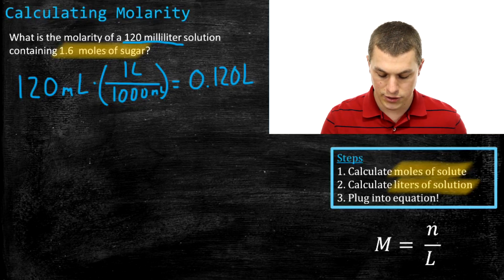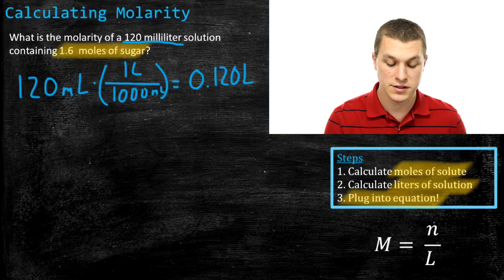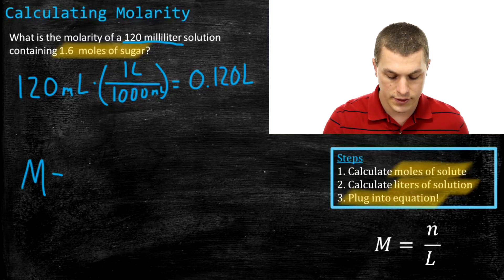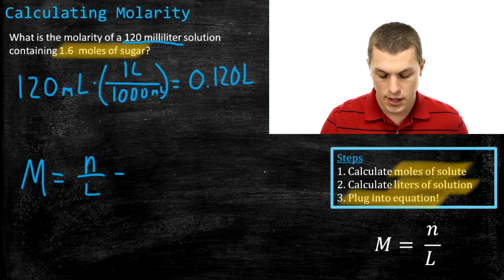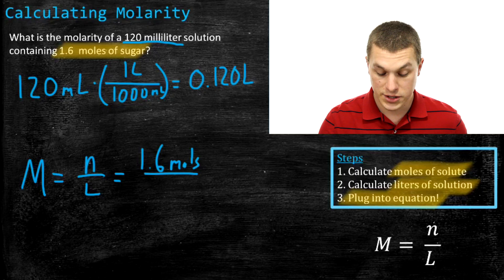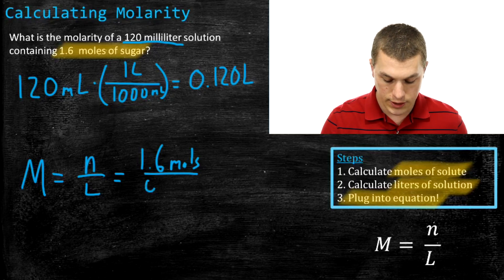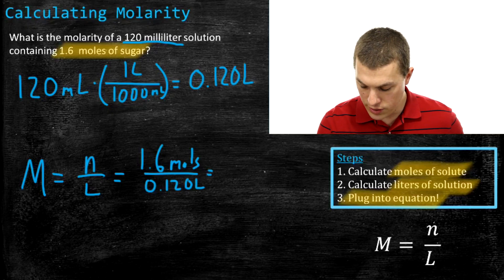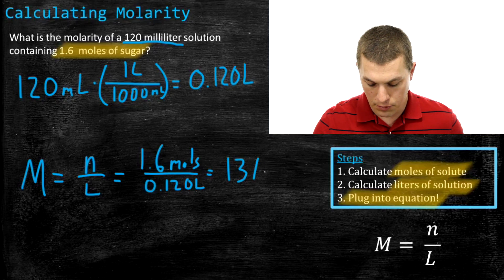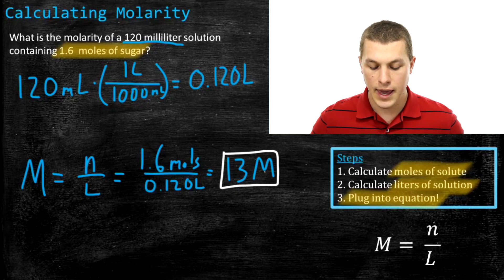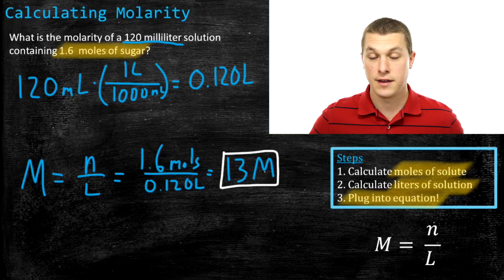Now that we have the right units, we plug into our equation. Molarity equals moles divided by liters: 1.6 moles divided by 0.120 liters gives us 13 molar. We get two significant figures because our moles only have two sig figs. So the concentration of sugar in this case is 13 molar.